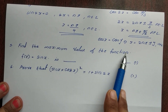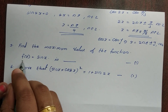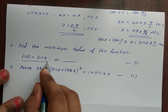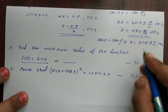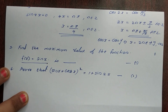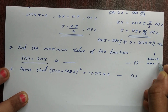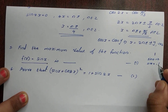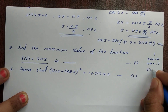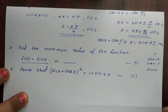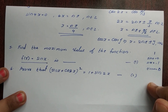Next question: Find the maximum value of the function f(x) = sinx. If sinx is at its maximum value, we know sin is maximum at 90°, which gives sin90° = 1. At sin0° = 0 and sin180° = 0, those are on the x-axis. So the maximum value of sinx is 1.